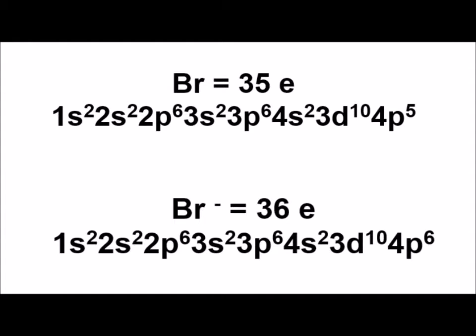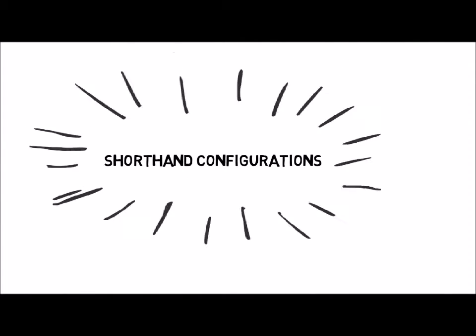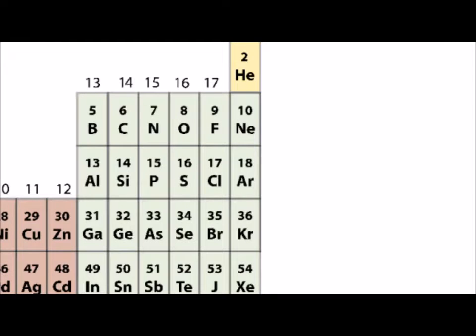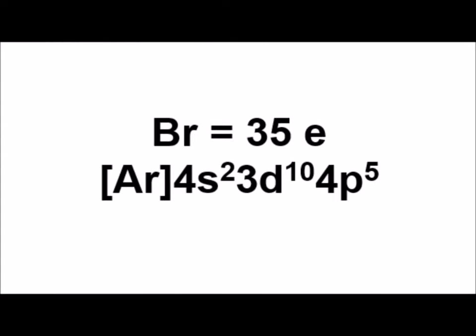To write a shorthand electronic configuration, use the chemical symbol of the previous noble gas in square brackets; for bromine it's argon. Then write out the orbitals that are occupied by the valence electrons. This makes the shorthand electron configuration for bromine [Ar] 4s² 3d¹⁰ 4p⁵.